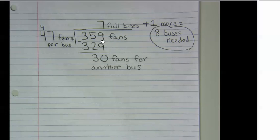47 goes into 359 seven times. 7 times 7 is 49, so bring down the 9, carry the 4. 7 times 4 is 28 plus 4 is 32. 359 minus 329 is 30 people left over.